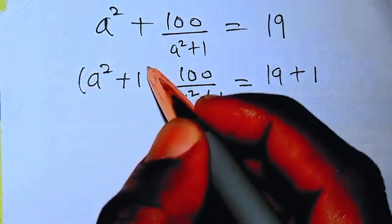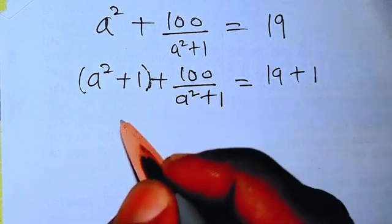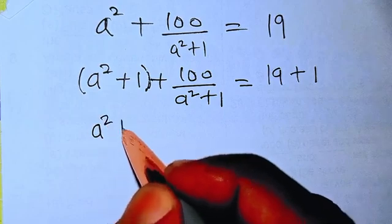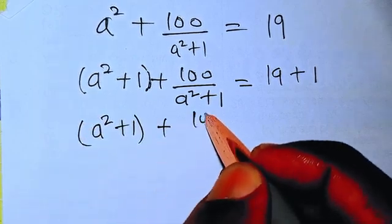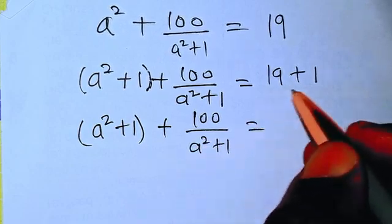So now what you are going to do. If you look at this, we have a squared plus 1 here, we have a squared plus 1 here. So this is going to be a squared plus 1 plus 100 over a squared plus 1 equals 19 plus 1. That's going to give us 20.